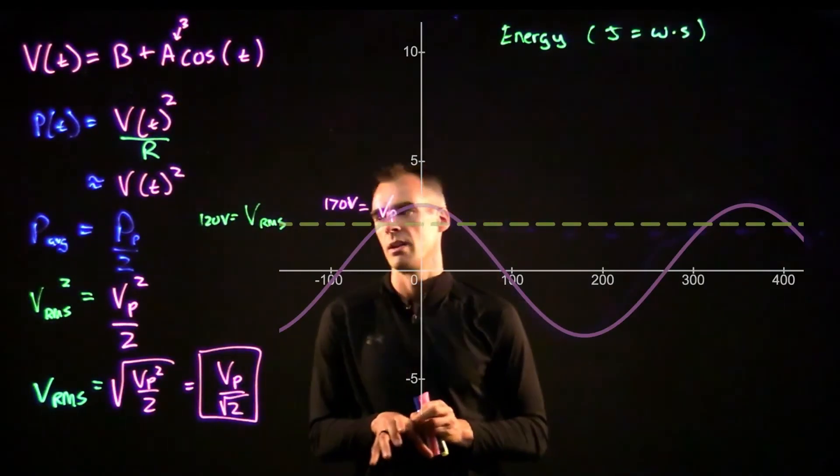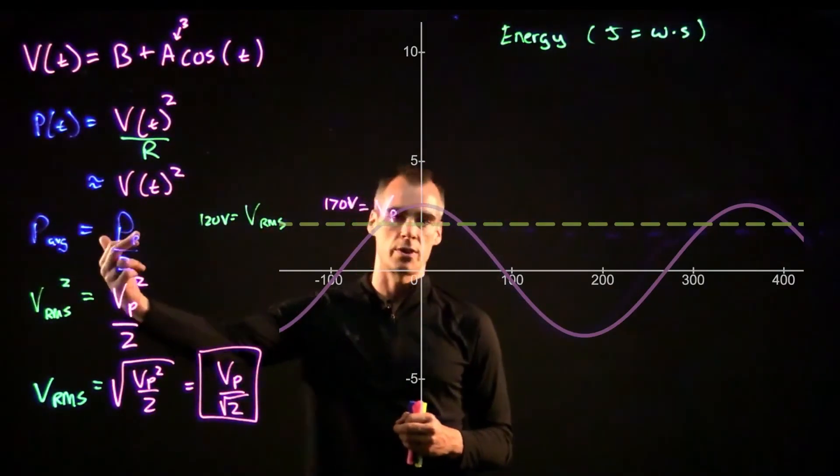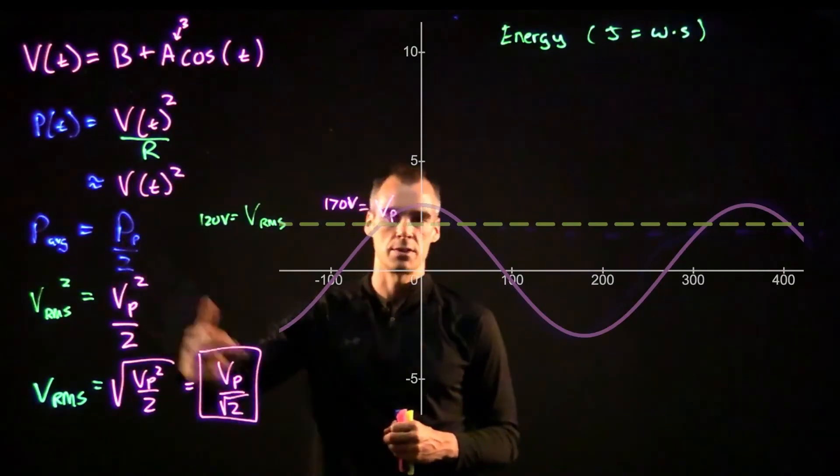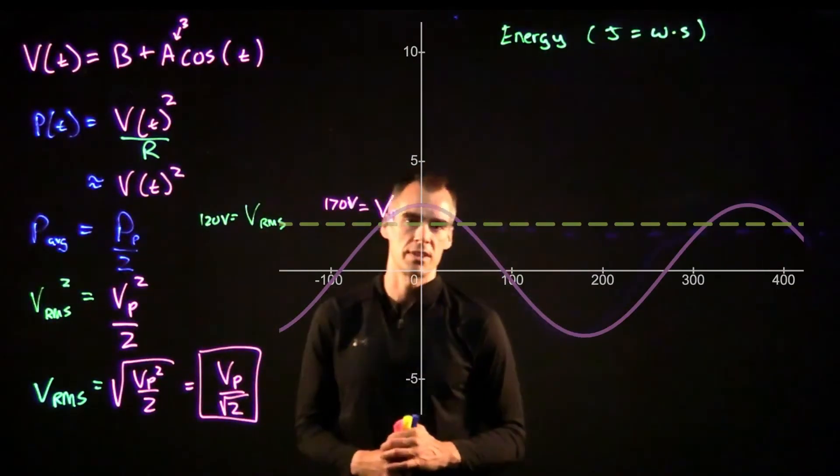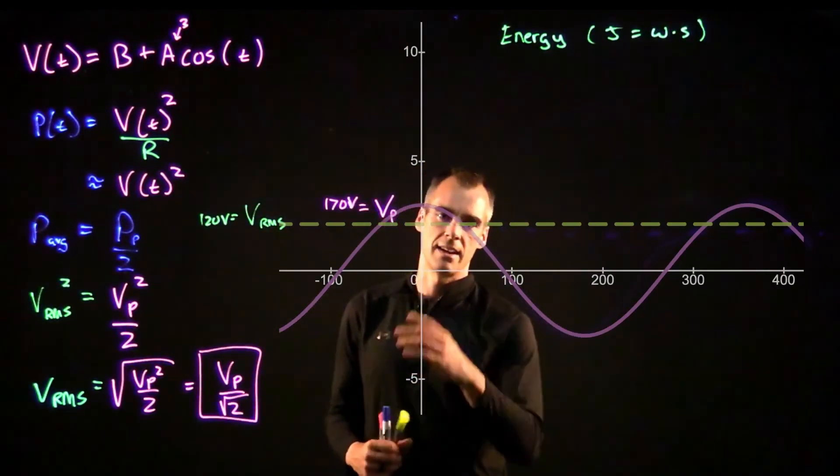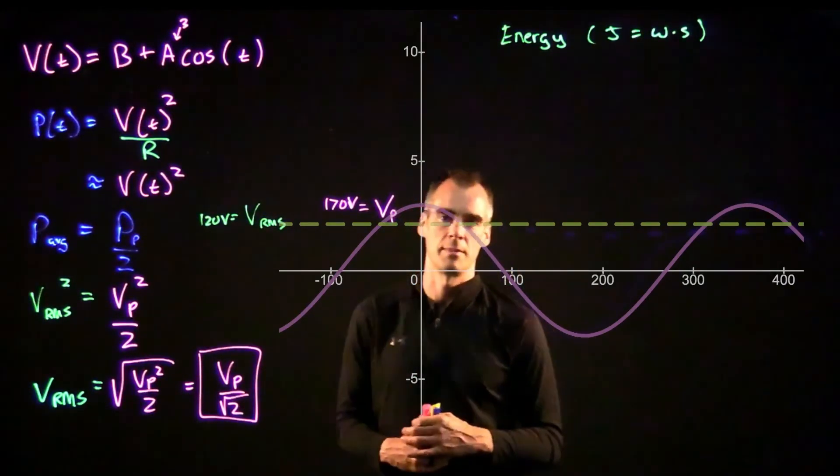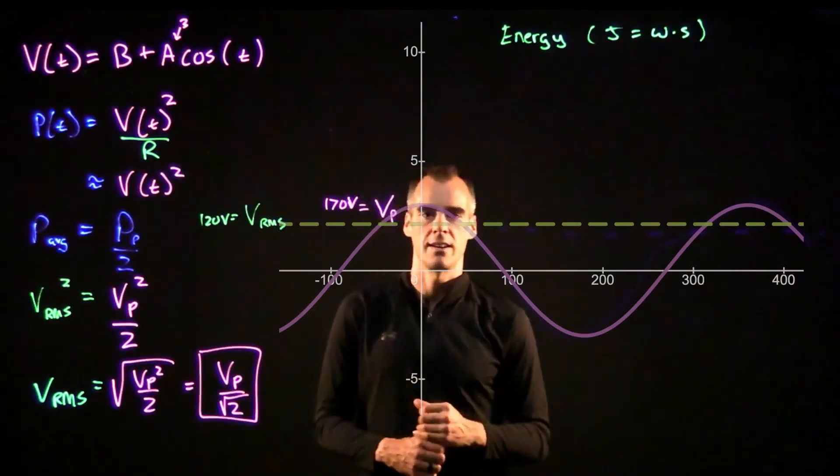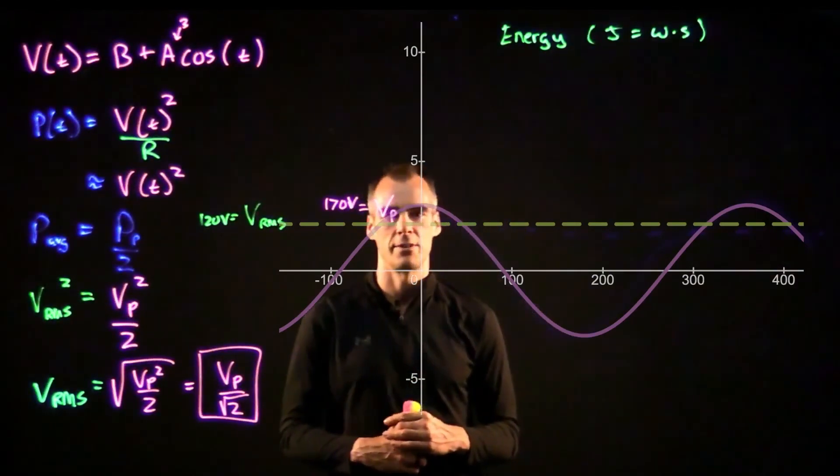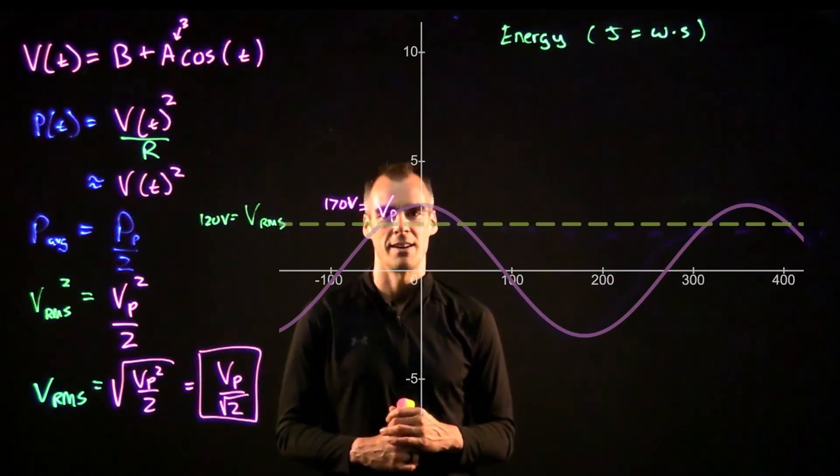But if you want to get into the math a little bit, when we found this P_average, we just sort of graphically saw it was P_peak over two, but I'm just going to nerd out and show how we actually get that using the integral for that value instead. And it's not too bad, it's kind of fun. So go ahead and check that out if you are so inclined, but until next time, take care.